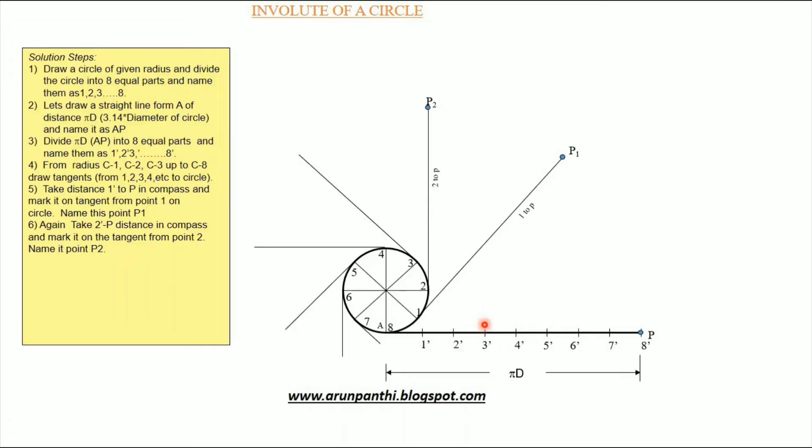Take three dash to P, four dash to P, five dash to P, up to seven dash to P distance in compass and mark on the respective tangent and locate P3, P4, P5, P6, up to P8 points.